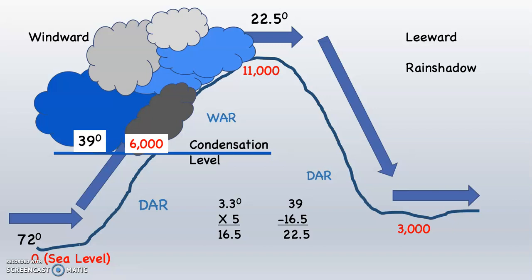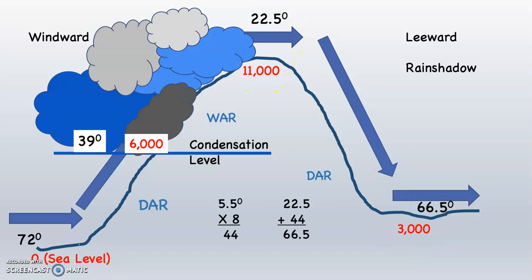Now the air is going to descend from 11,000 down to 3,000 feet on the leeward side. Every time air descends, we use the DAR. How many thousands of feet is that parcel subsiding from 11,000 down to 3,000? The answer is 8,000. So we take 5.5 times 8, which is 44. Because the air is descending it's warming up, so this time we add. 22.5 plus 44 is 66.5 degrees. At 3,000 feet on the leeward side, that parcel of air is 66.5 degrees.